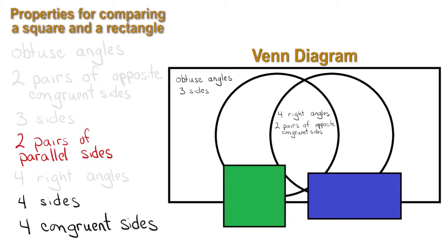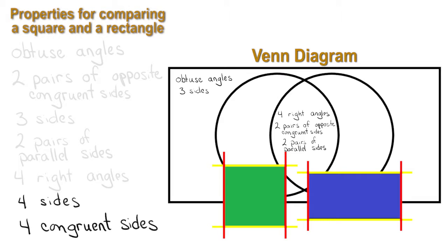The next property is two pairs of parallel sides. This property is common for both of the shapes, so it will be written in the center section.